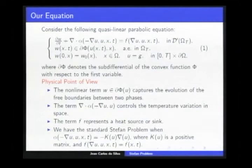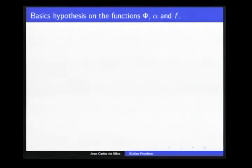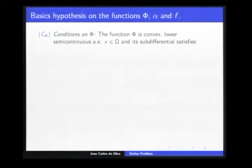The function f represents a heat source or sink. You have the standard Stefan problem when the monotonous operator is linear in the first variable, and the function f depends only on the variables x and t. To have the existence property, we need to put some basic hypotheses on the functions f, alpha, and phi.